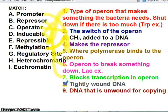Blocking transcription is the repressor. And then tightly bound, tightly wound DNA is heterochromatin. And unwound is euchromatin. Again, these are in eukaryotes. You need to look at your notes so that you can see that.